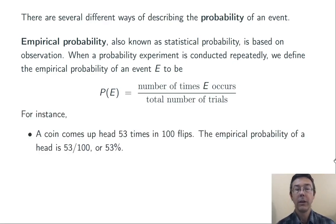This is just going to correspond to the proportion of times the event has occurred in the past. For instance, if we flip a coin 100 times and it comes up heads 53 times, the empirical probability of the coin coming up heads is 53 and 100, or 53%.